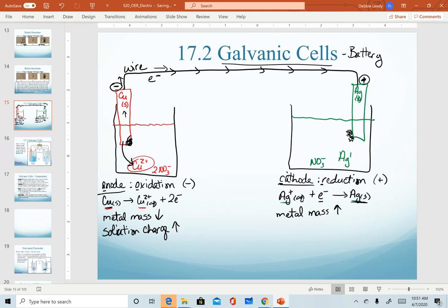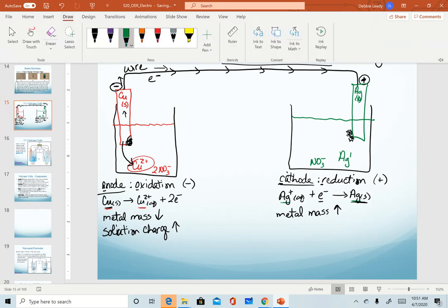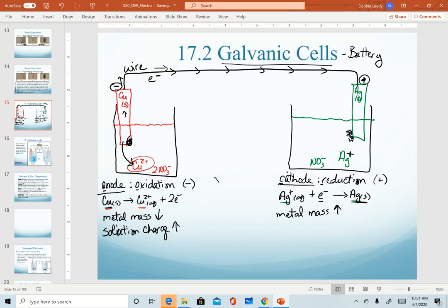So there's our silver electrode. And in this one, as the reaction happens, the silver ions are actually plating out on the surface of the silver metal. Because that's happening, the charge of my solution in the cathode will always decrease.